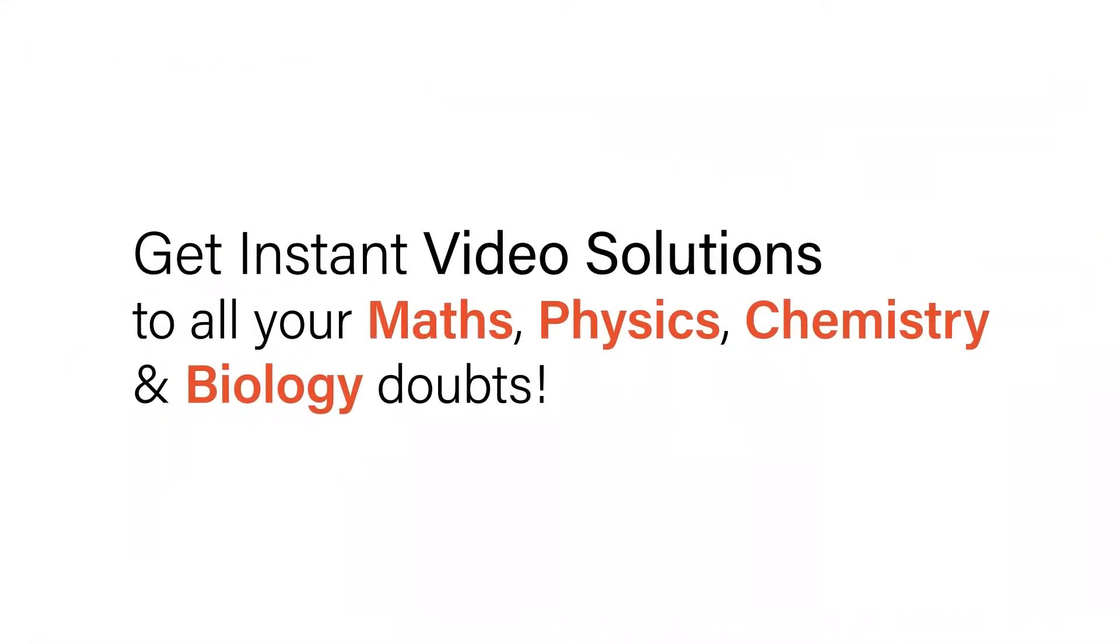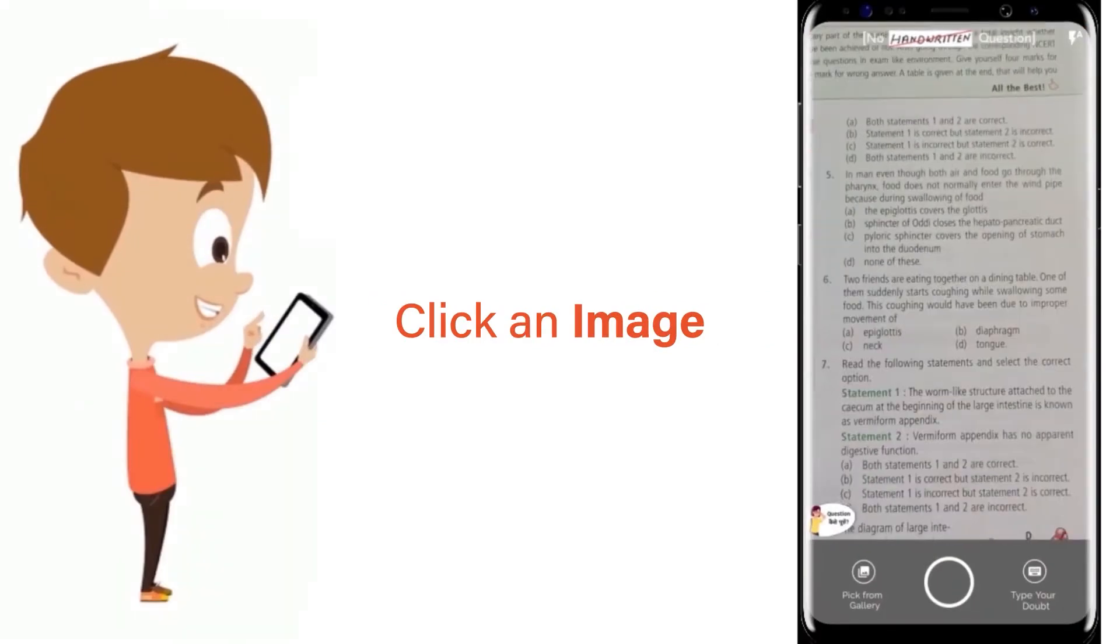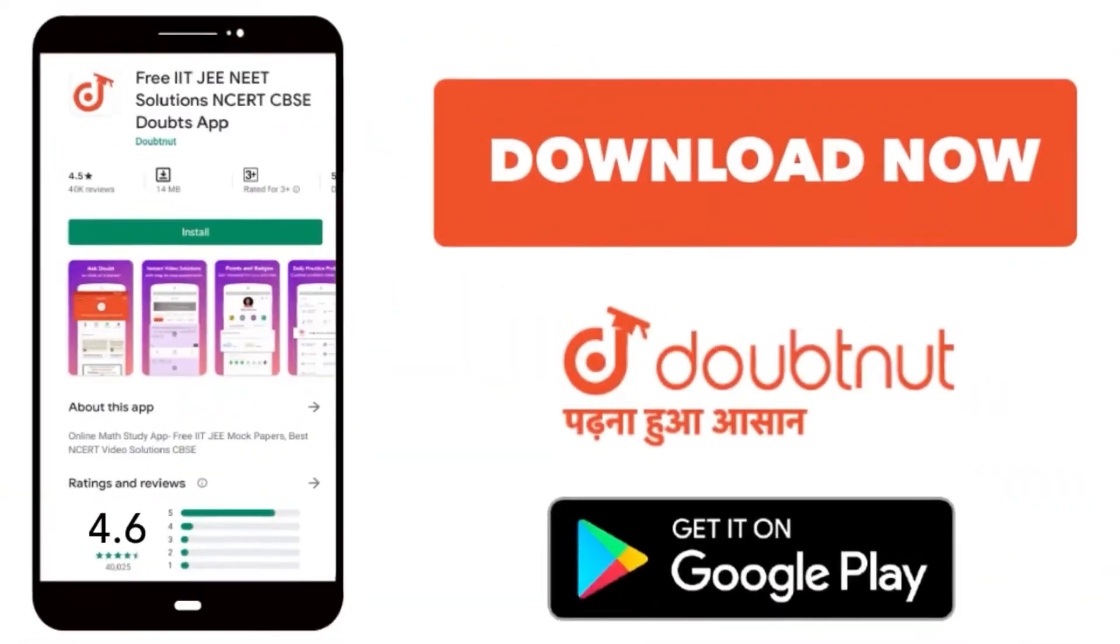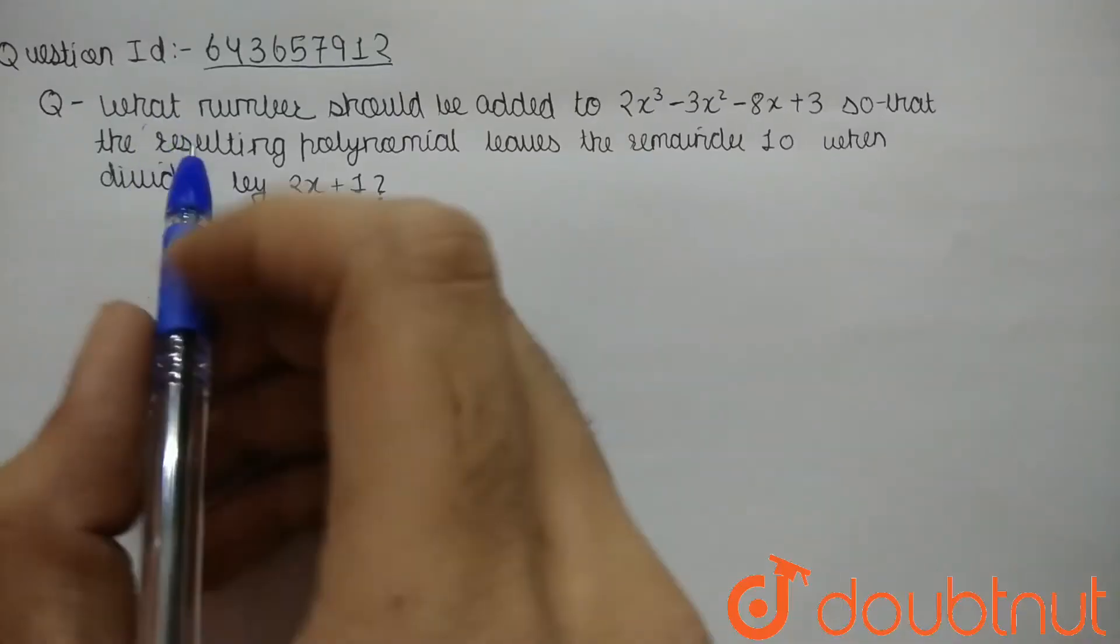With Doubtnet, get instant video solutions to all your maths, physics, chemistry, and biology doubts. Just click the image of the question, crop the question, and get instant video solution. Download Doubtnet app today. The given question is: what number